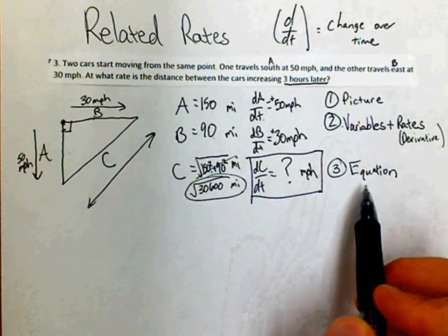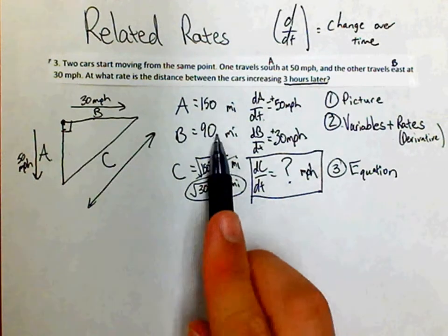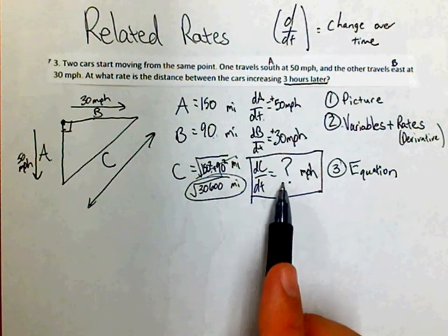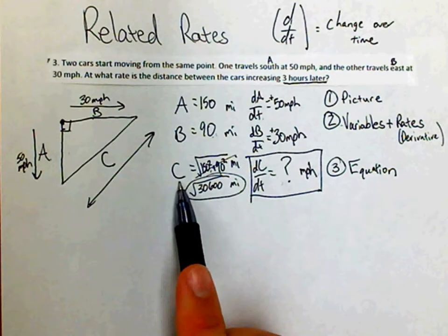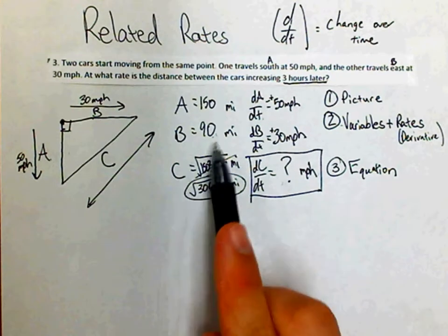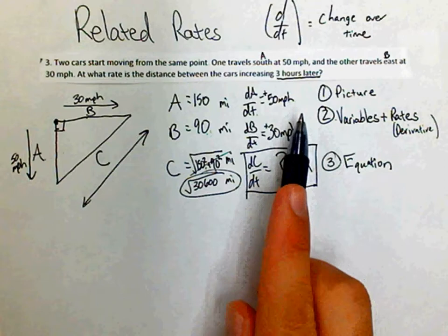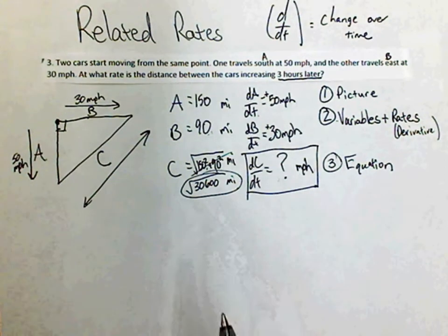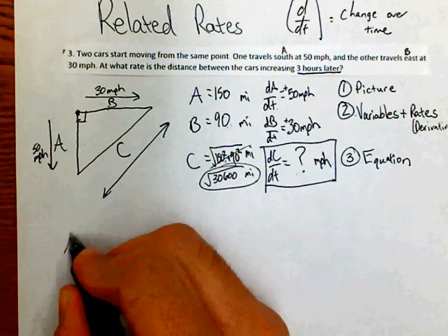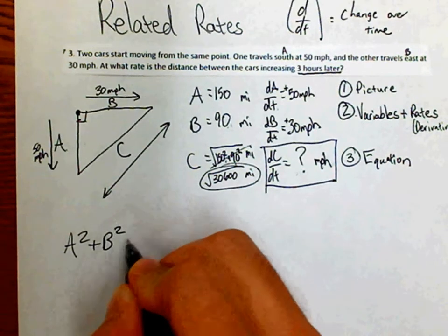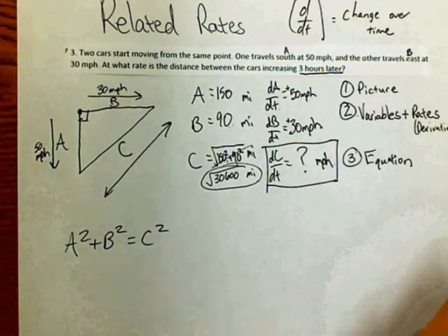Your equation must connect your variables together. Specifically, since I'm looking for dc/dt, my equation has to have c in it. It's helpful if I can use a and b too, since I know a lot about them. As soon as you saw the right triangle, you should recognize the Pythagorean theorem: a² + b² = c².